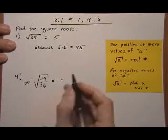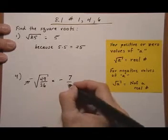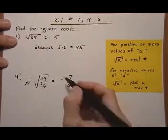And then we do root 49, that would be 7 because 7 times 7, over root of 36 would be 6. So we get minus 7 sixths.